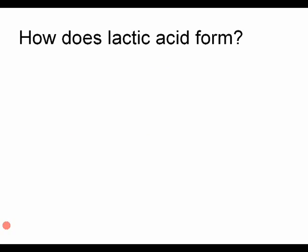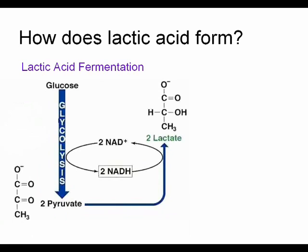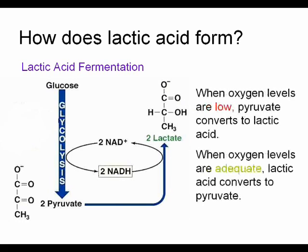So how does lactic acid form? Our body forms lactic acid by a process known as lactic acid fermentation. NAD+ gets oxidized and becomes NADH in glycolysis, turning pyruvate into lactate rather than going through pyruvate oxidation. This happens because there isn't enough oxygen in the body — when oxygen levels are low, pyruvate converts to lactic acid. When oxygen levels are adequate, lactic acid converts back to pyruvate.